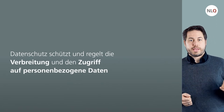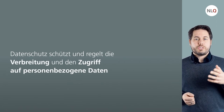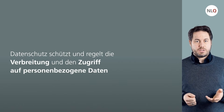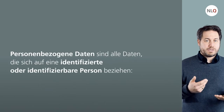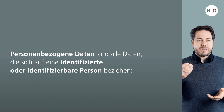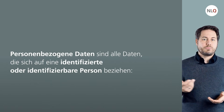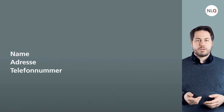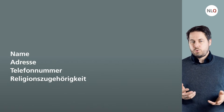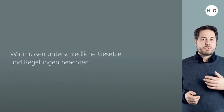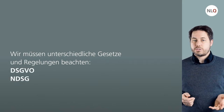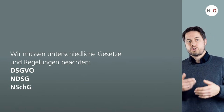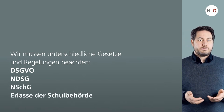Datenschutz schützt und regelt die Verbreitung und den Zugriff auf personenbezogene Daten. Datenschutz ist ein Verbot mit Erlaubnisvorbehalt. Personenbezogene Daten sind alle Daten, die sich auf eine identifizierte oder identifizierbare Person beziehen – also beispielsweise ein Name, eine Adresse, eine Telefonnummer, die Religionszugehörigkeit und ähnliche Punkte. Wir müssen unterschiedliche Gesetze und Regelungen beachten, zum Beispiel die Datenschutzgrundverordnung, das Niedersächsische Datenschutzgesetz, das Niedersächsische Schulgesetz sowie Erlasse der Schulbehörde.